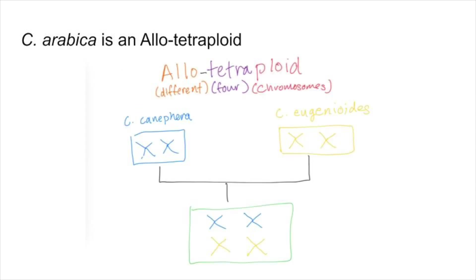Coffea arabica is actually what's called an allotetraploid — an organism that has four copies of each chromosome coming from two different species. This is different from an autotetraploid, which has four copies from the same species. So instead of having one copy of a chromosome from canephora and one from eugenioides, arabica actually has both copies of canephora and both copies of eugenioides, forming an organism with four copies of every chromosome, whereas each of its parents only had two. That helps arabica because even though the canephora and eugenioides chromosomes are so different they can't pair up and split evenly during meiosis, having multiple copies of each chromosome means there's no problem pairing up during meiosis.